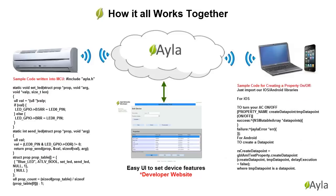This is the sample code for creating a property to turn off or on your air conditioner unit. You can easily create properties controlling the air conditioner unit based on schedule, location, temperature, and even the weather to turn off or on the air conditioner.